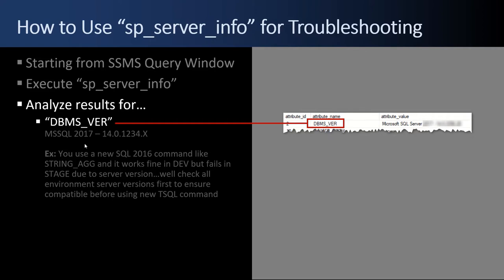You'll want to make note of that version number. An example of why: let's say you're using the new SQL 2016 string aggregate function and it saves you a lot of time, so you use it in your development server. But then you go to propagate it to stage and prod and it fails — because stage and prod aren't on the latest version of SQL Server, but dev is. You can save yourself a lot of hassle by running SP_ServerInfo on all environments and making sure they're all on the same version.